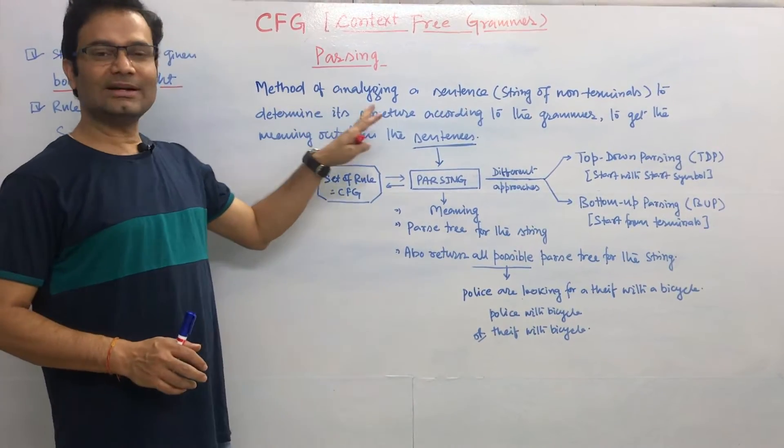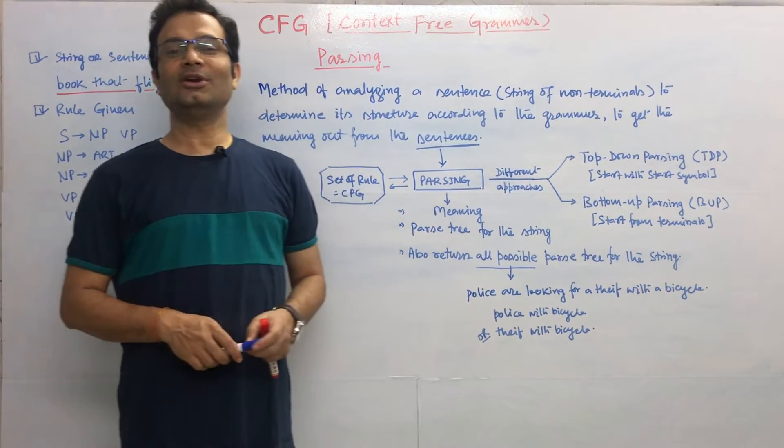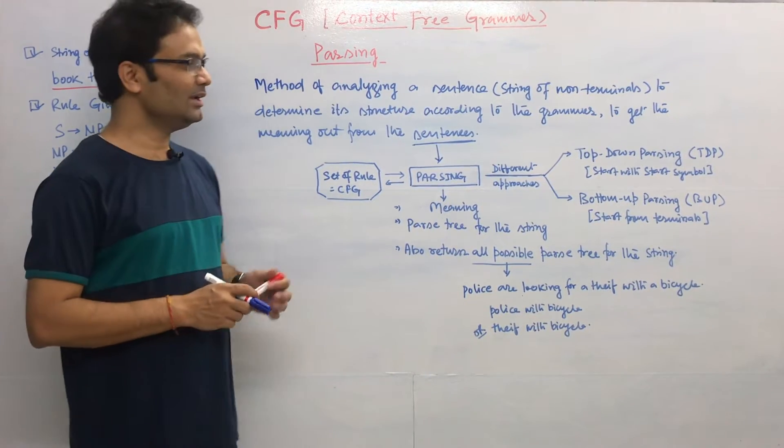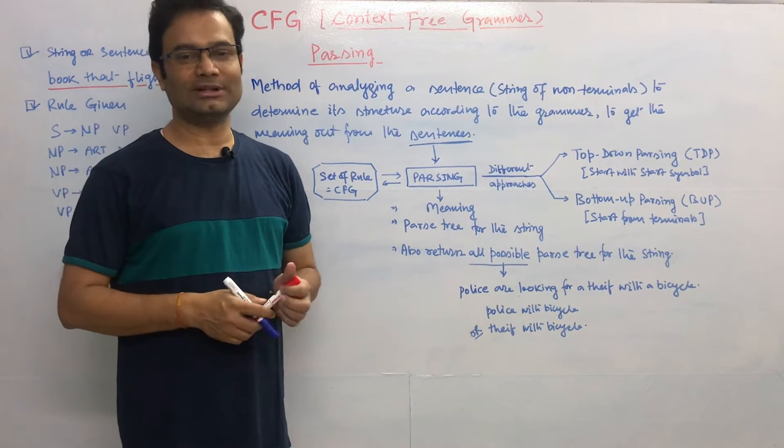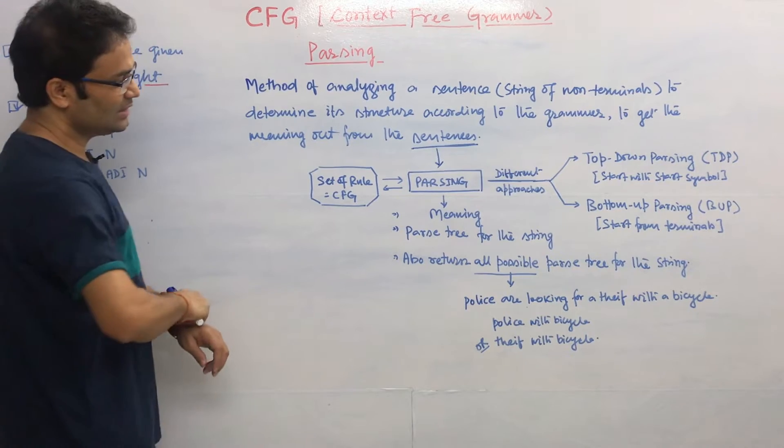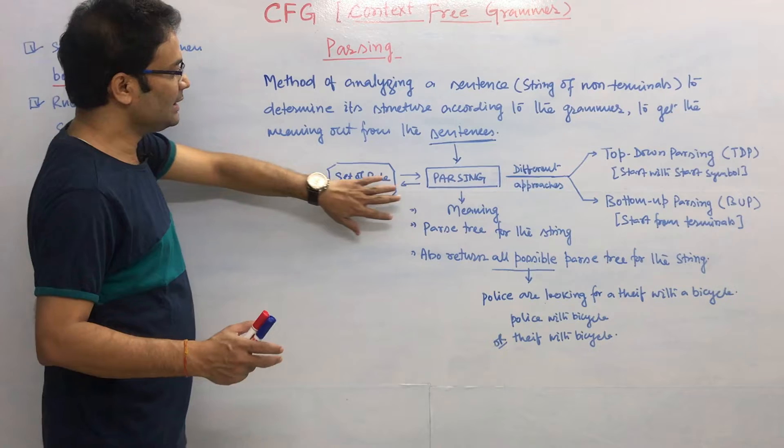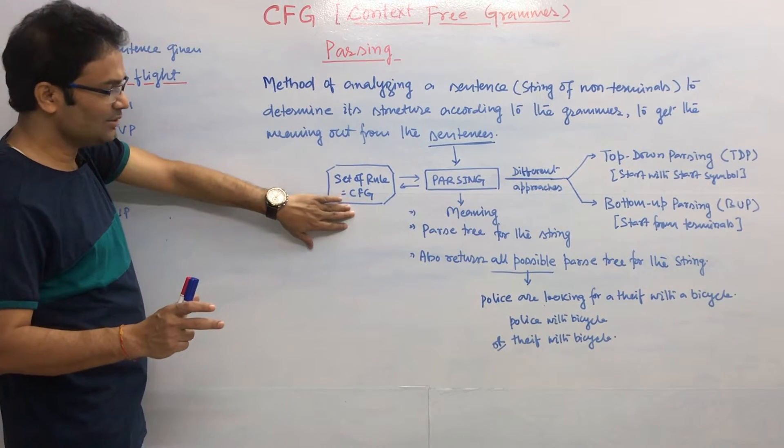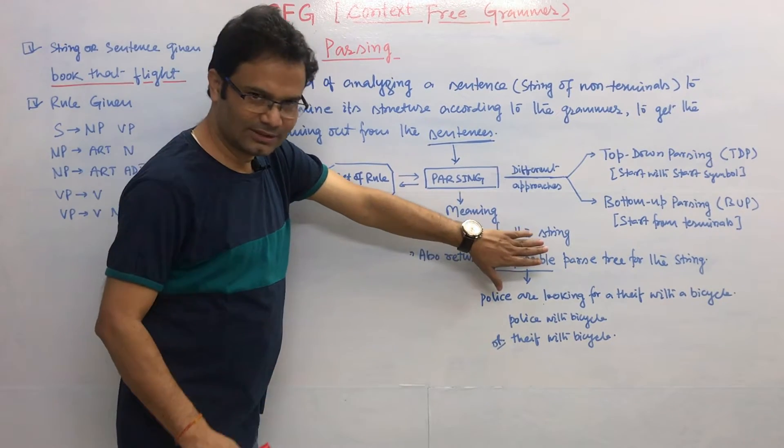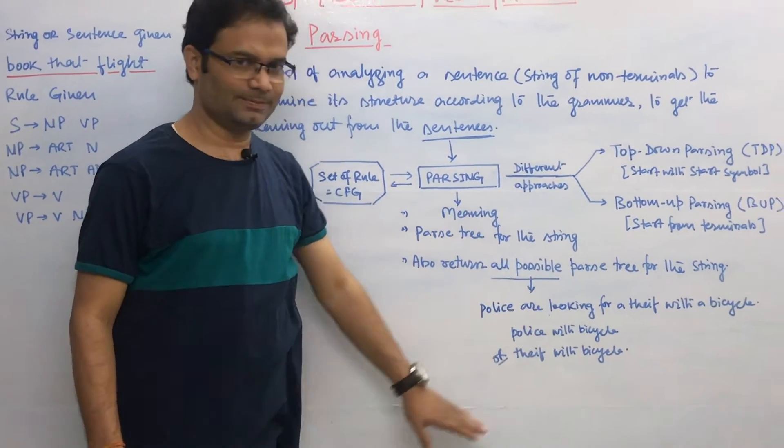Parsing is a method of analyzing a sentence or the string of non-terminals to determine the structure according to the grammars. We can take the meaning out from the given sentence. If you have any sentence and if you send this sentence to the parsing logic, with the help of the particular context-free CFG or the rules, then it will generate the parse tree for the given string or you can generate all the possible parse trees of the given string.